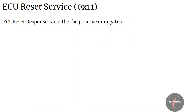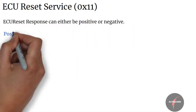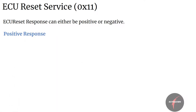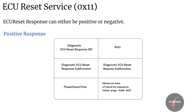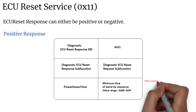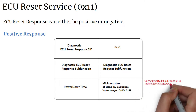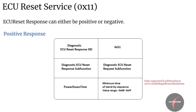The response from the ECU Reset can either be positive or negative. In the positive response, we have the ECU Reset response SID which maps to value 51, then the sub-function in the response which is equal to the sub-function present in the request. We also have the power down time, which indicates the minimum time of the standby sequence when the server remains in the power down sequence. This parameter is only supported if the sub-function is set to enable rapid power shutdown.